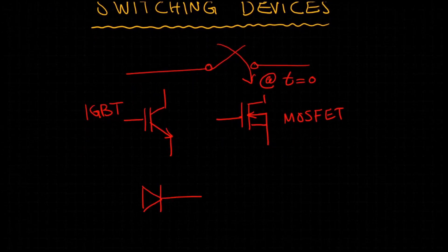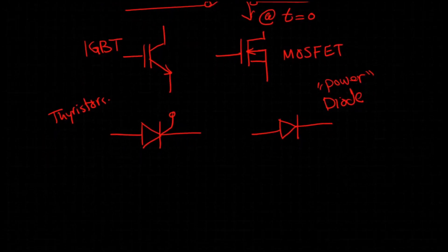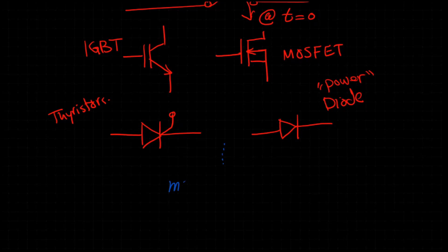Switching devices can be transistors such as IGBTs or MOSFETs, can be thyristors or power diodes, and many other devices. We'll talk about switching devices in another video.